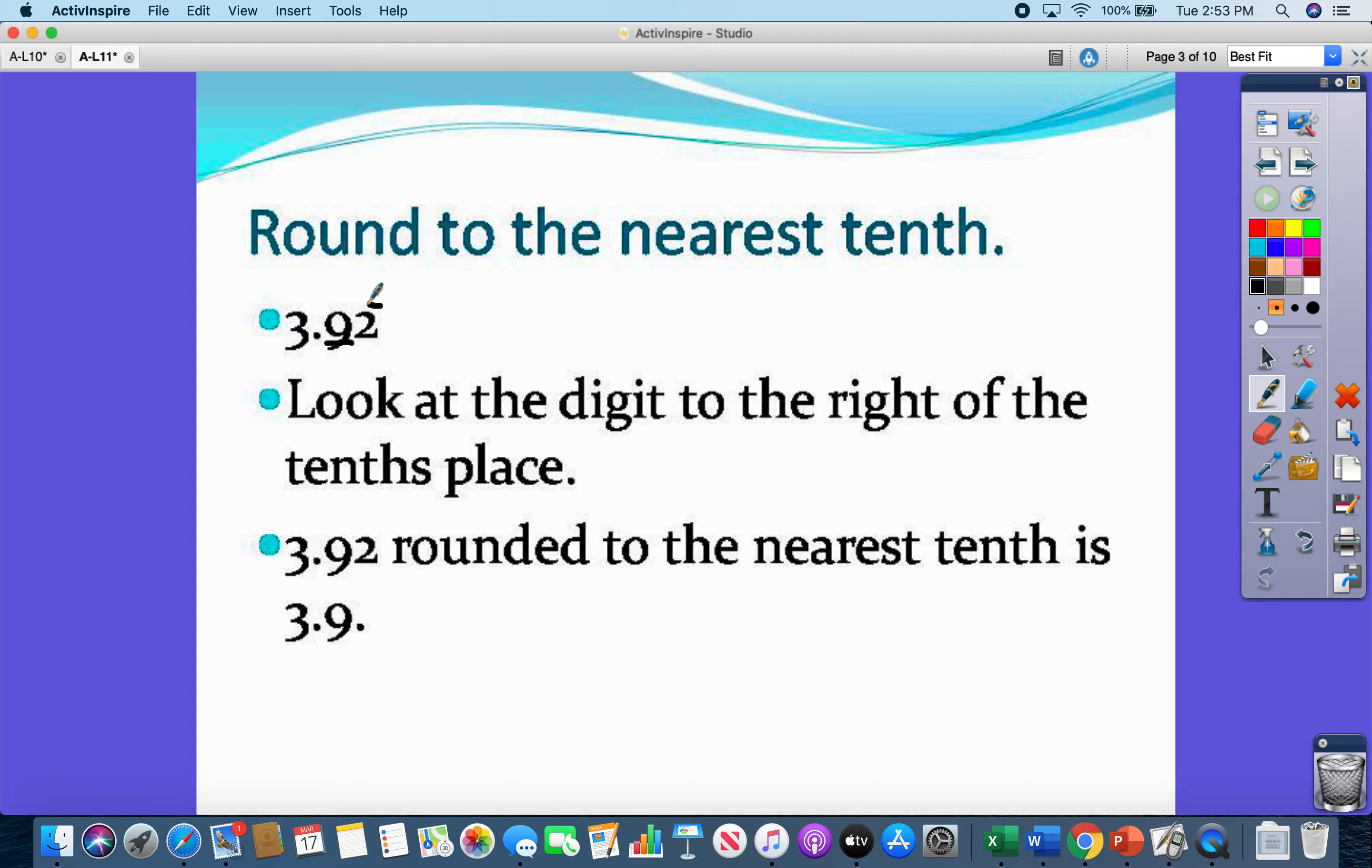But I need to look at the digit to the right, right? To the right of nine is 2. 2 rounds which way? Down. So that means that my answer is going to chop it off, and my rounded answer to the nearest tenth is going to be 3.9. All right, pause that. Listen to it again if you need to.